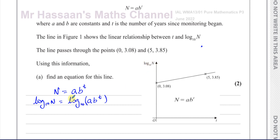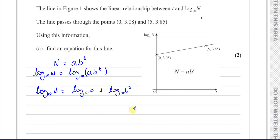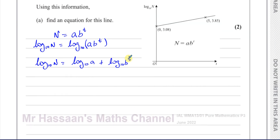Using the laws of logarithms, I split this up by the multiplication law first: log base 10 of N equals log base 10 of A plus log base 10 of B to the power of T. Then applying the power law, this becomes log base 10 of N equals log base 10 of A plus T times log base 10 of B.